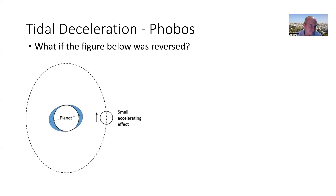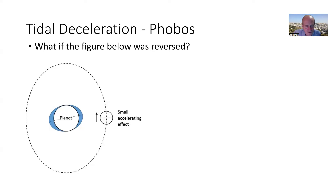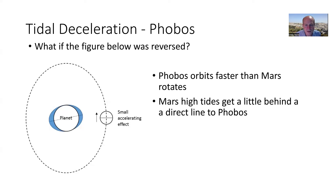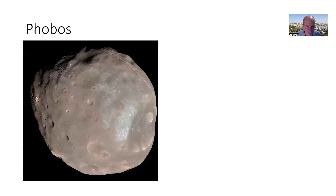Now let's talk about tidal deceleration. A minute ago we talked about tidal acceleration where the planet is rotating faster than the moon is orbiting. But what would happen if this was reversed — if the moon was going around the planet faster than the planet is rotating? That's actually happening with Phobos and Mars. Phobos orbits very close to Mars and very fast, so instead of accelerating the moon, you get a deceleration effect: Phobos is slowing down and Mars's rotation is speeding up.